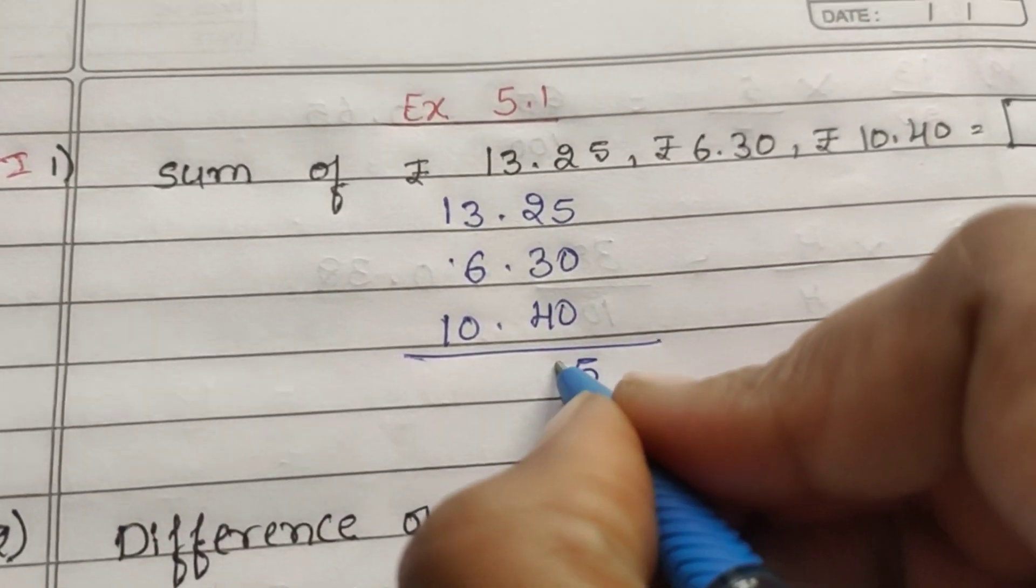Okay, let's see exercise 5.1. First, find the following. Question 1: Sum of 13.25, 6.30 and 10.40. Let's add. 5 plus 0 is 5, 5 plus 0 is 5, 2 plus 3 is 5, 5 plus 4 is 9. So 0, 3 plus 6 is 9, 1 plus 1 is 2. So rupees 29.95.